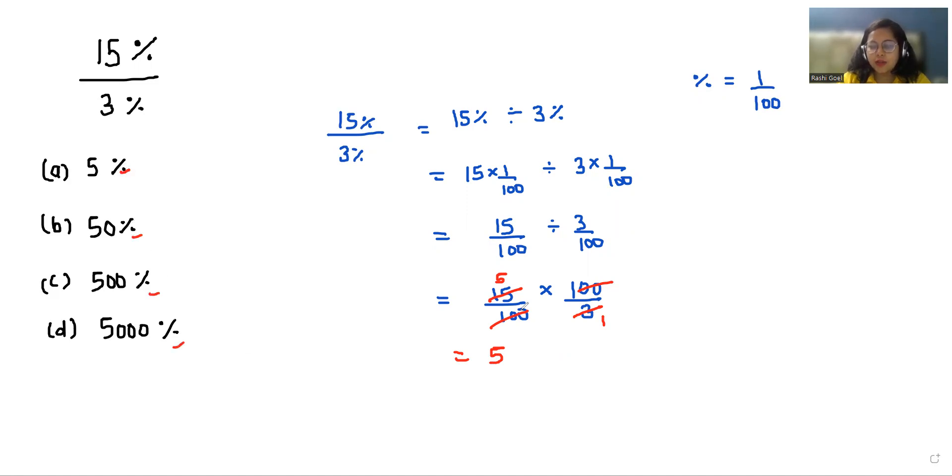So we will convert to percentage. Percentage means 1 by 100. I'm going to multiply by 100 and divide by 100, so it becomes 500 by 100, which we can write as 500 times 1 by 100.